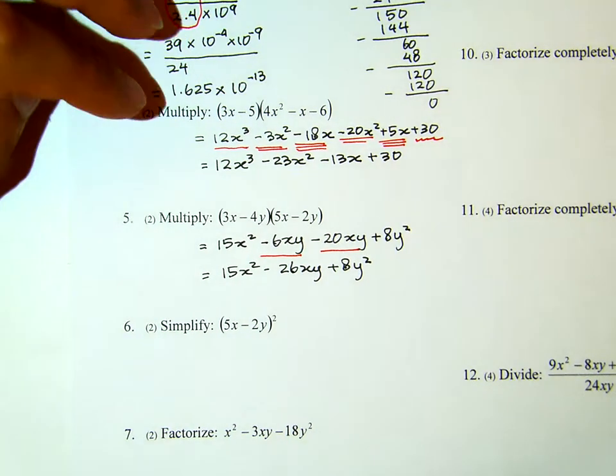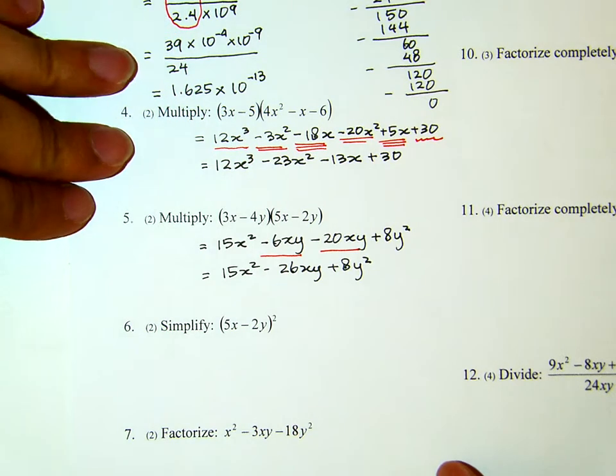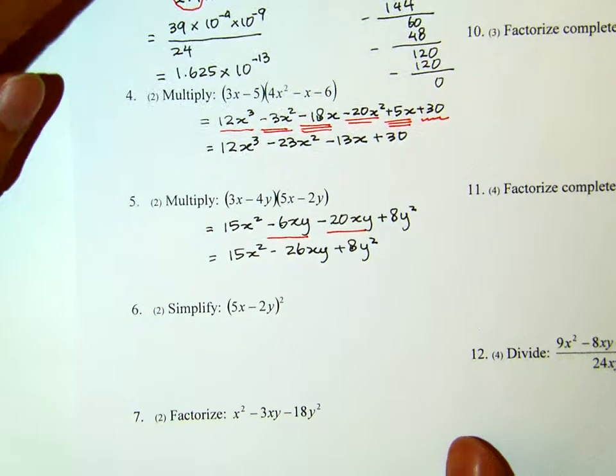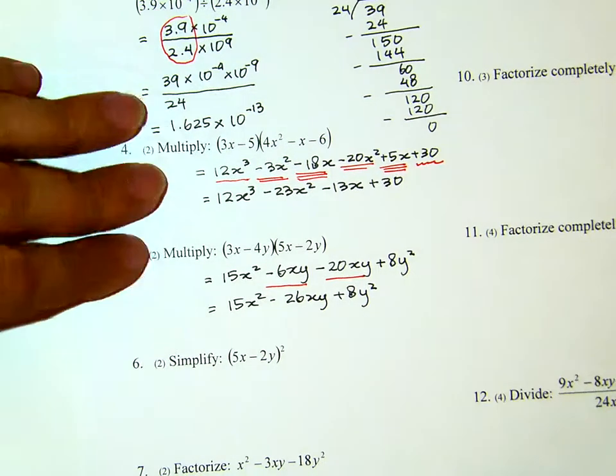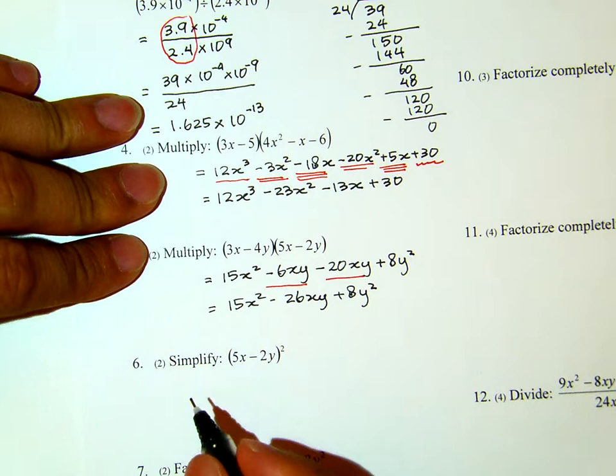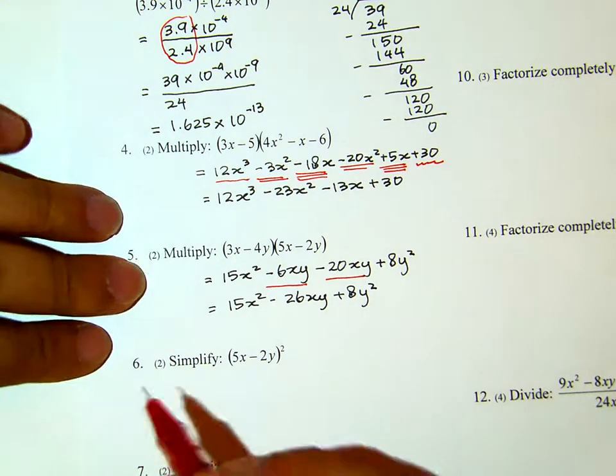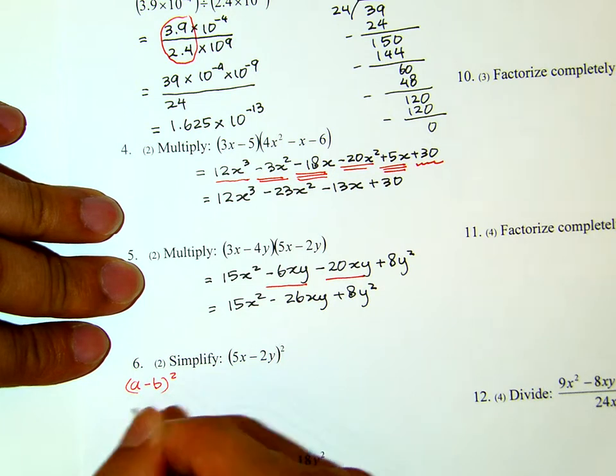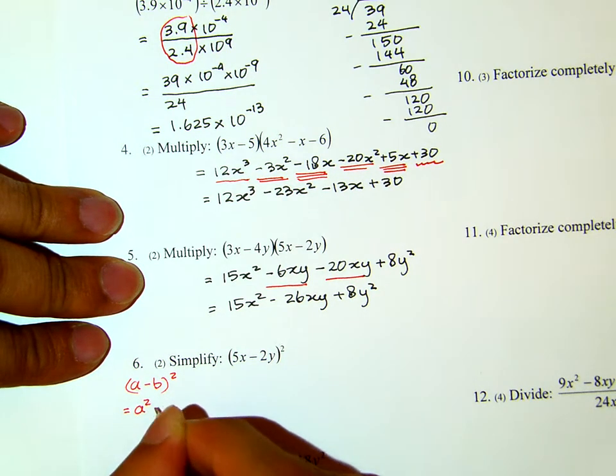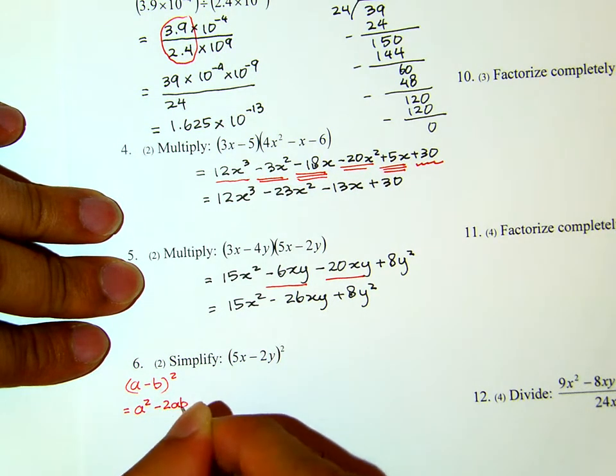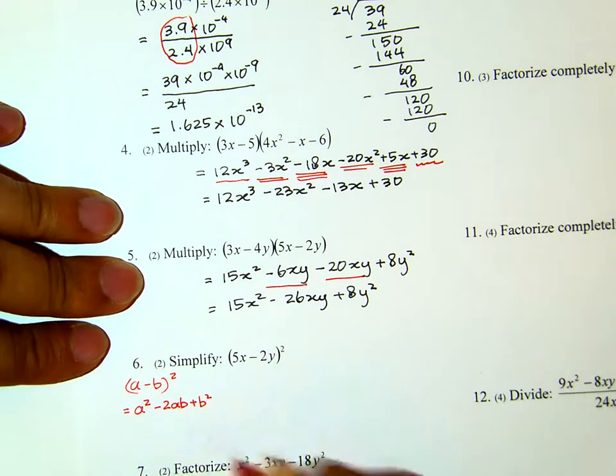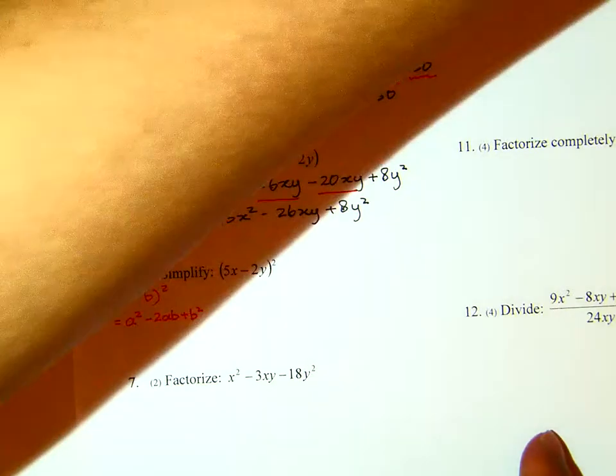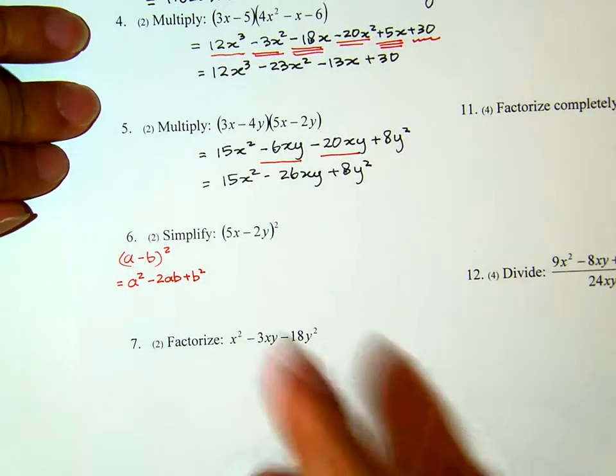Number 6: Simplify this. We have a binomial being squared. For this question, I expect you to actually remember this pattern. A minus B quantity squared equals A squared minus 2AB plus B squared. That's what I expect you to know.